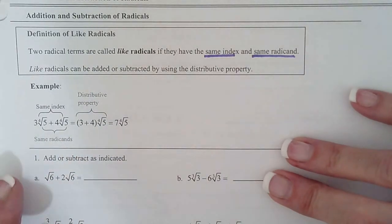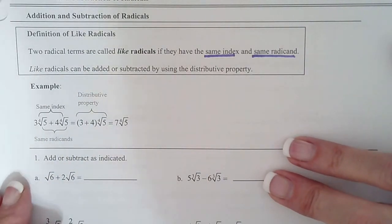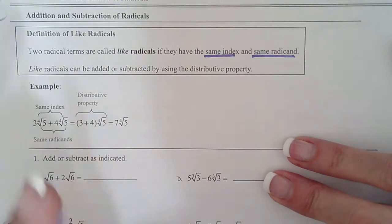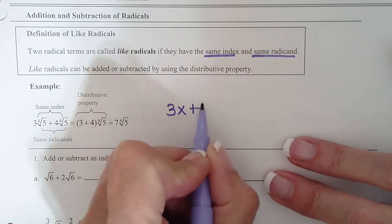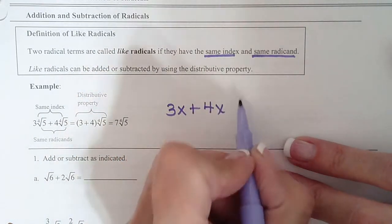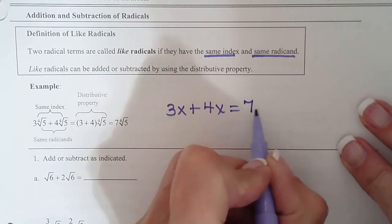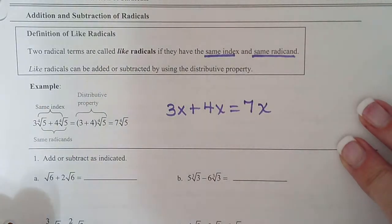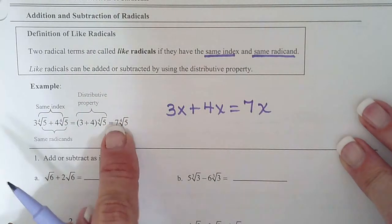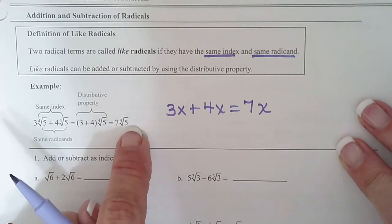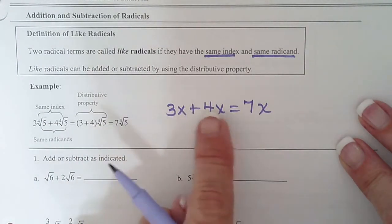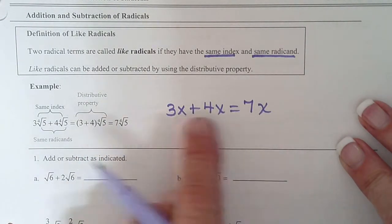So anytime I kind of get mixed up on the rules to follow, I just put an x in there and I go, what would I do if that was 3x plus 4x? Oh, I would add the coefficients and then just keep it x. Well, same rule apply for radicals. As long as they're the same, add the coefficients, keep the radical. Just like we add the coefficients, we kept the x.